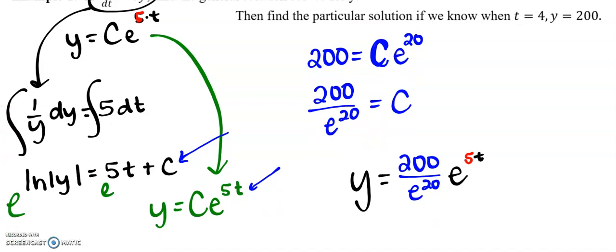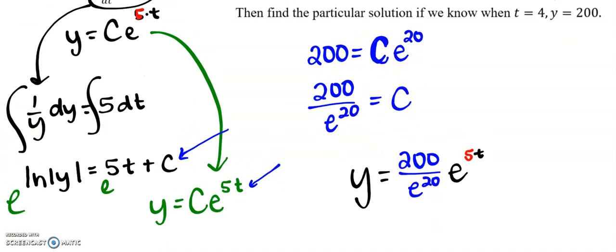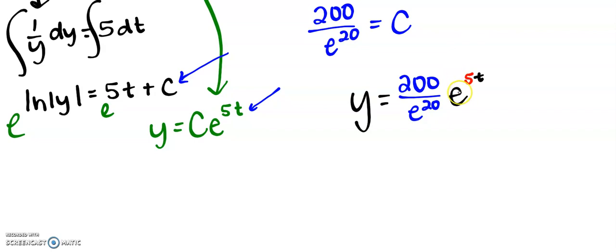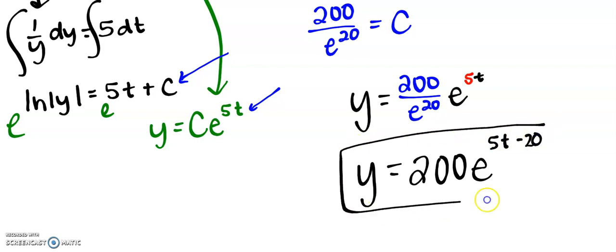We're just going to leave that as an exact answer, which means our particular solution is y equals 200 over e to the 20th e to the 5t. And now from there, you could do a little more cleanup. Some people were asking about this in AP classroom about getting things to match. e to the 5t over e to the 20th, you would subtract your exponents. So another version of this answer might say 200 e to the 5t minus 20. And that's properties of exponentials from pre-calculus.